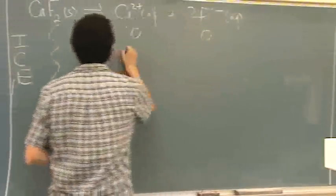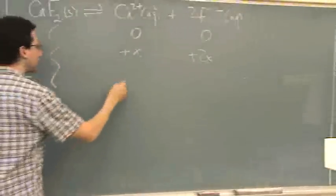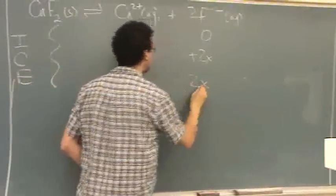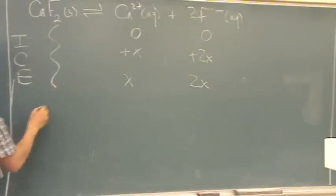0 and 0, plus x, and plus 2x. So, 0 plus x, 0 plus 2x. And then, let's write this out.